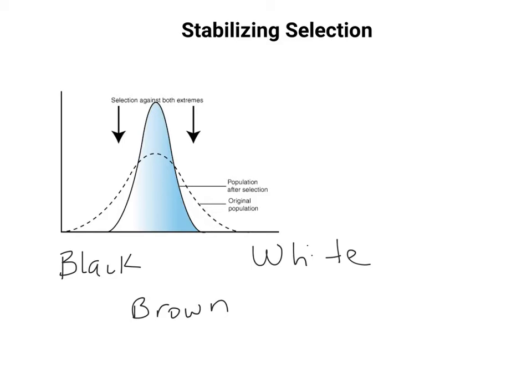Nature is now going to choose the brown bunnies because they blend in with the sandy environment. The black bunny and the white bunny are going to stick out and be easy prey, easily spotted by a fox. The brown bunny, because it blends in with the sand, is able to survive. So stabilizing selection selects against those two extremes until eventually all you have is the brown bunny.